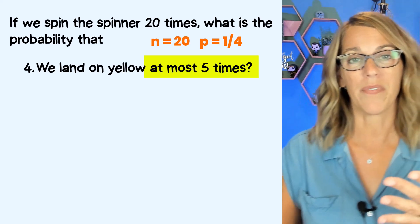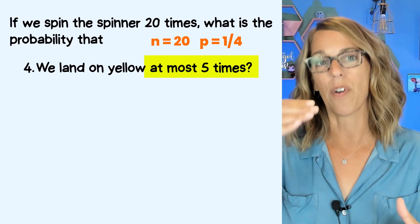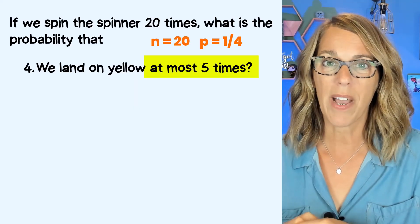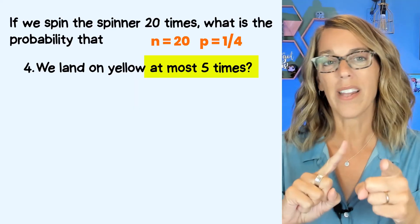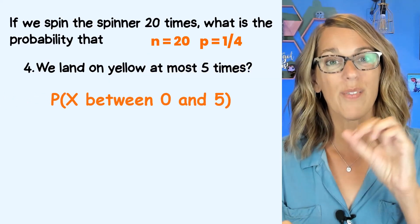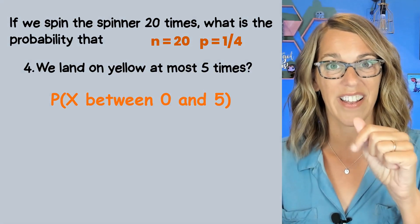So if you think about the possible number of yellows, we could get five or four or three or two or one or zero yellows. So when we think about this between what and what for that binomial CDF, we want between zero and five. Let me show you a shortcut.